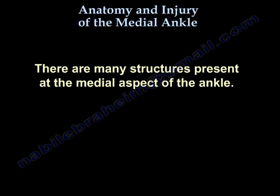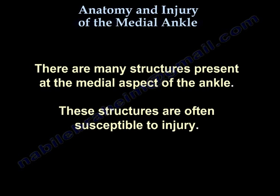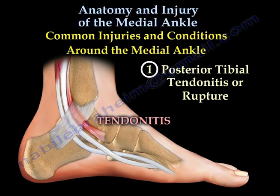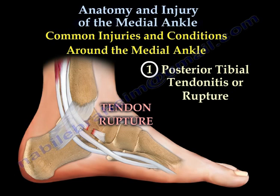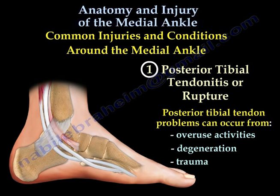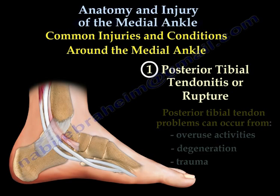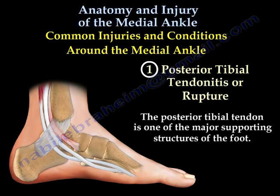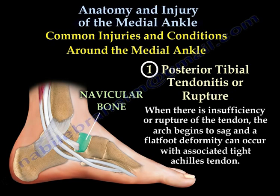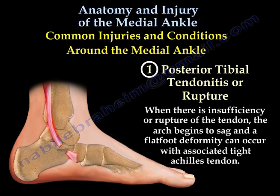There are many structures present at the medial aspect of the ankle, and these structures are often susceptible to injury. The first condition is posterior tibial tendonitis or rupture. Posterior tibial tendon problems can occur from overuse activities, degeneration, or trauma. The posterior tibial tendon is one of the major supporting structures of the foot, helping to keep the arch in its normal position. When there is insufficiency or rupture of the tendon, the arch begins to sag and a flat foot deformity can occur with associated tight Achilles tendon.